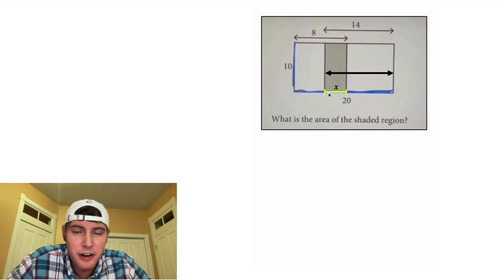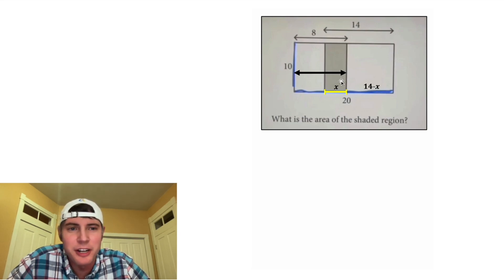So if we copy down the arrow, we know this entire distance right here is equal to 14. And since this piece is X, that means this remaining piece is going to be 14 minus X. And we have the same thing going on right here. This whole entire distance is equal to 8. This is X, which leaves 8 minus X for this piece.